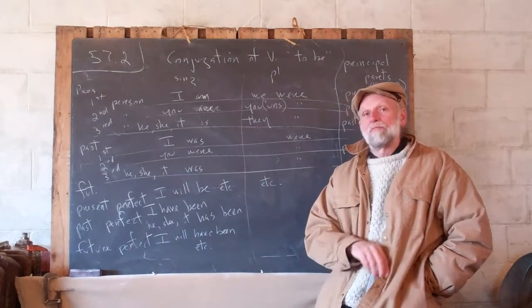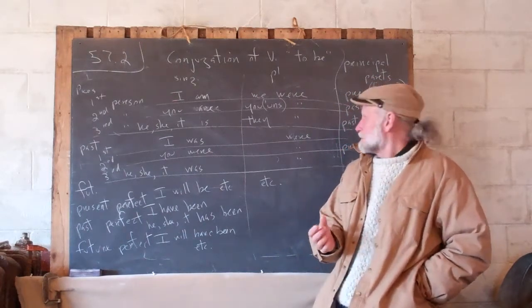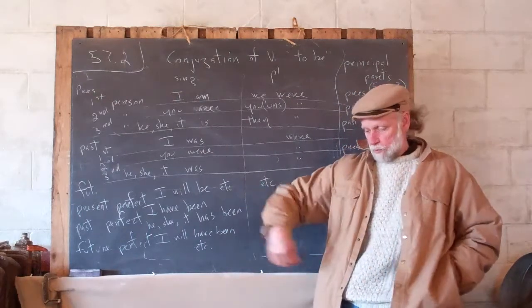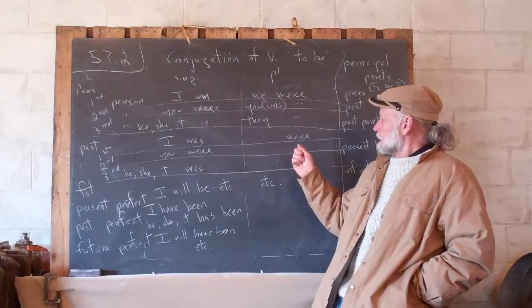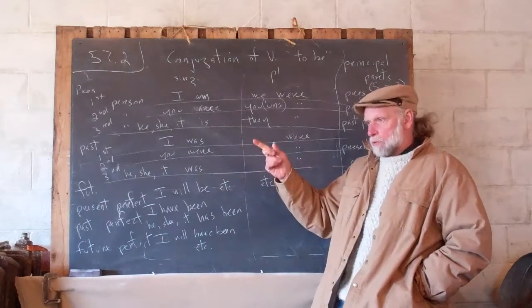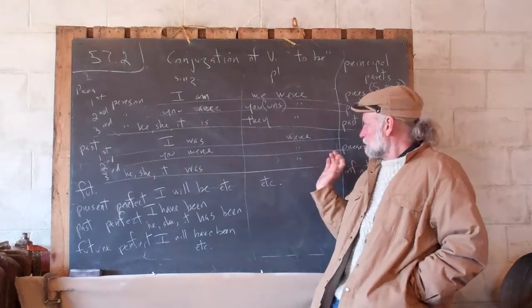So many other languages have many, many irregular verbs. You go to the plural side. Not I, but we. We was. There. No, no. We were. Yuns were. You were. Yuns were. They were. It stays the same.